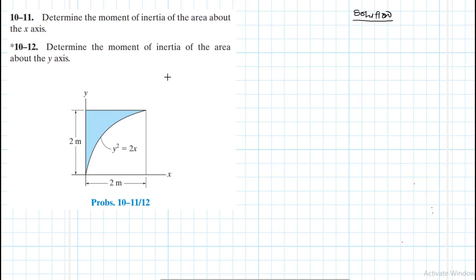Mathematically, the moment of inertia about the x-axis is defined as Ix, which is equal to the integral of y-squared dA. And the moment of inertia about the y-axis is defined as the integral of x-squared dA. You can think of moment of inertia as a geometric property — just like centroid — it is a geometric property of a shape, such as a cross-section of a beam, that describes how the area of that shape is distributed around a chosen axis.